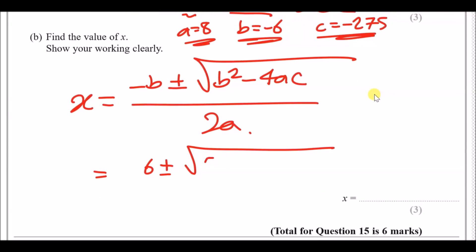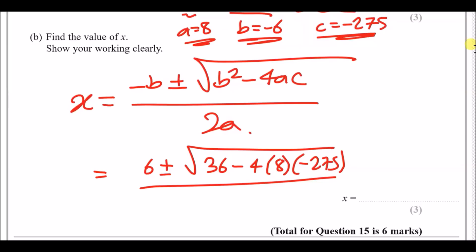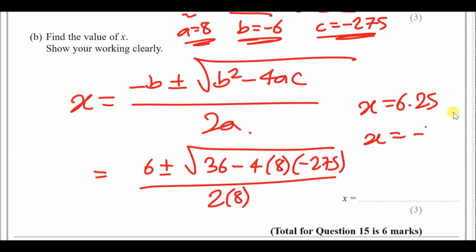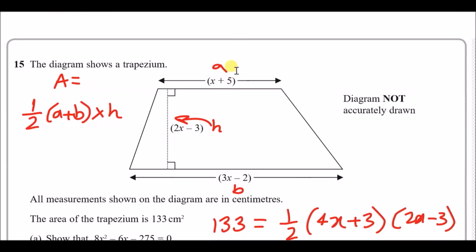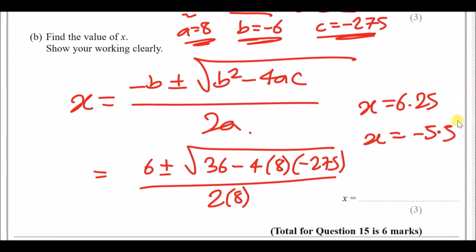Always wrap your values in brackets in the calculator. The positive root gives x = 6.25 and the negative root gives x = −5.5. Only one answer is correct — since we're working with lengths, a negative value is not valid, so x = 6.25.